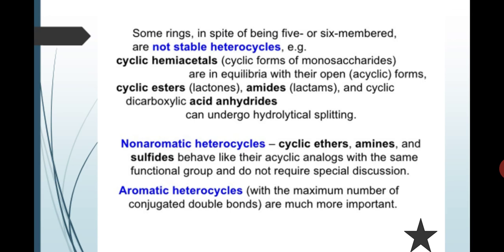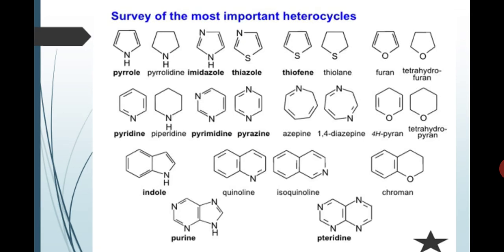Now next is the most important heterocycles. This is heteroatom containing nitrogen, sulfur, and oxygen. Some examples of heterocycles: pyrrole, imidazole, thiazole, furan. These are some examples and structures.